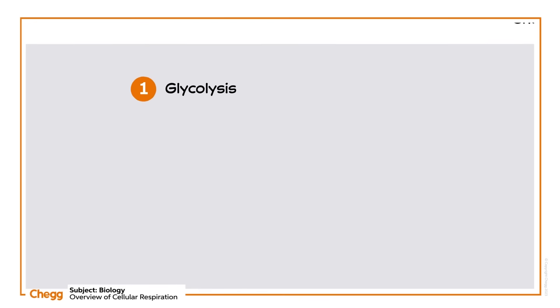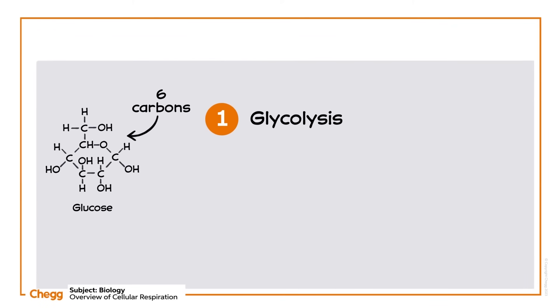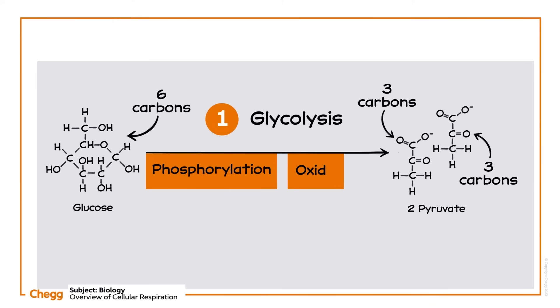So let's break this process down a little. Glycolysis occurs in the cytoplasm without the presence of oxygen. It's an anaerobic process, so it happens in both aerobic and anaerobic respiration. The task of glycolysis is to break a single glucose molecule down into two smaller pyruvate molecules. There are a number of steps in the process, but they can be categorized broadly into two main stages: one, phosphorylation, and two, oxidation.